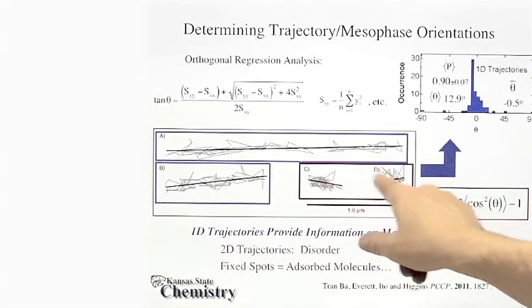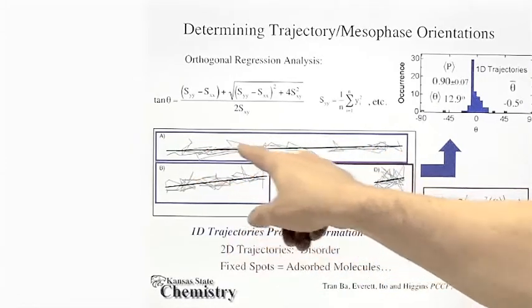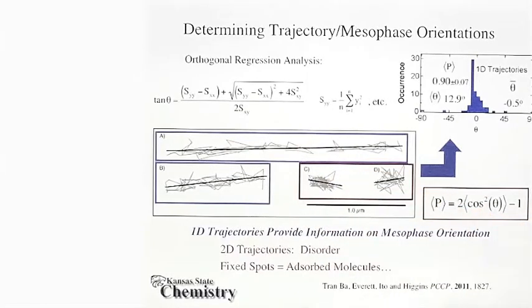Two molecules which are immobile, and two which are mobile and exhibiting Brownian-like motion along one dimension.